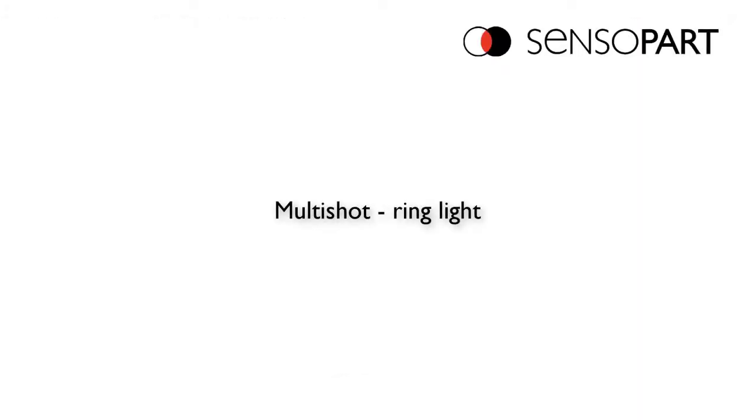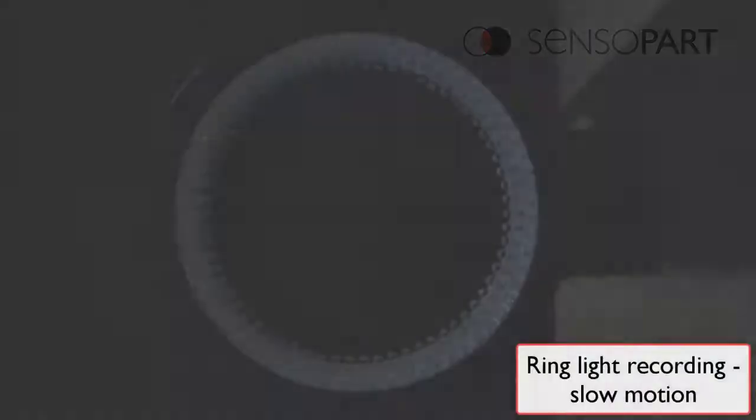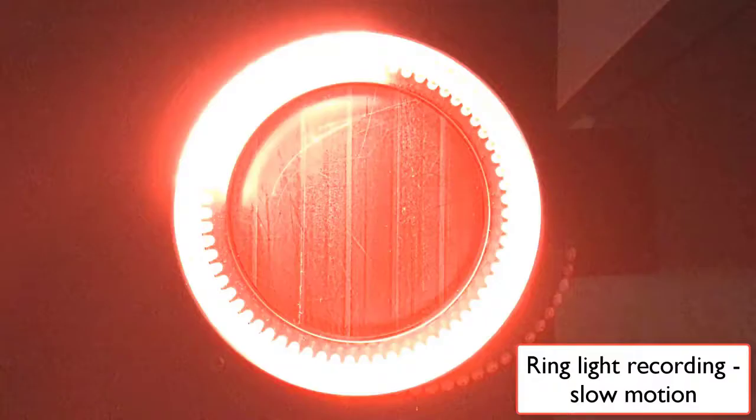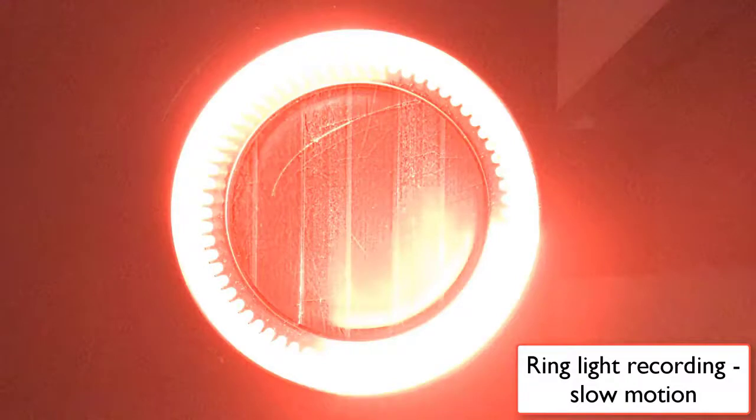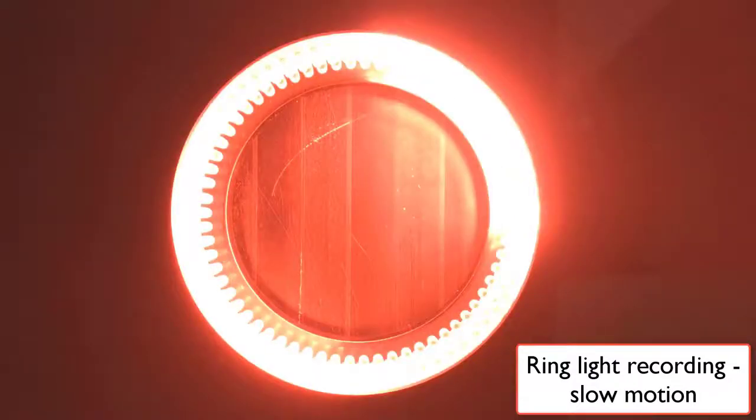Let's look at our dark field multi-shot ring light in more detail. This is a slow-motion, the north quadrant, south quadrant, east quadrant, and west quadrant all light up in turn.